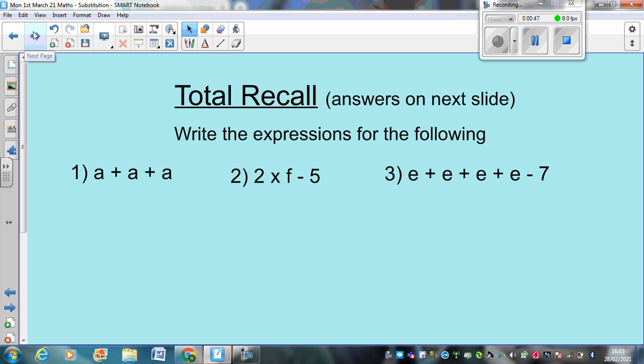Okay, here are the answers. So, A plus A plus A is 3A. 2 times F is 2F, so 2 times F, take away 5, is 2F, take away 5. And then E plus E plus E plus E, take away 7, is 4E, take away 7.